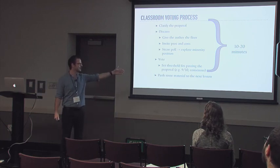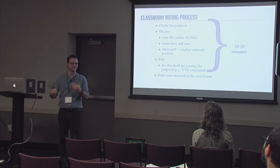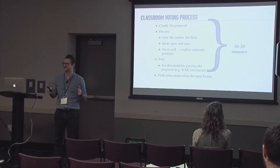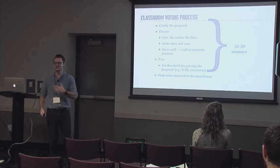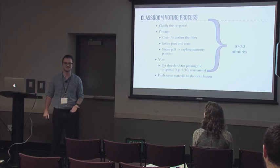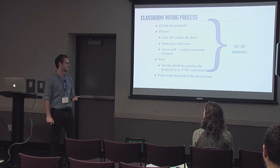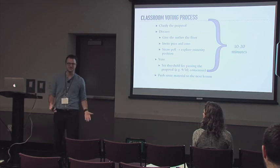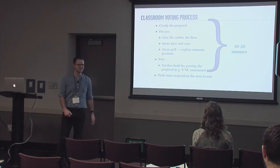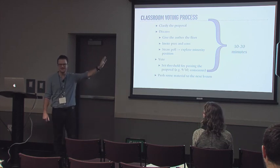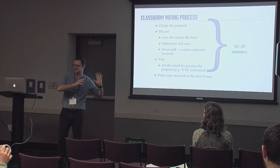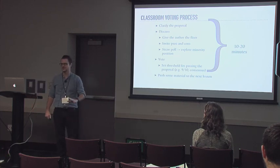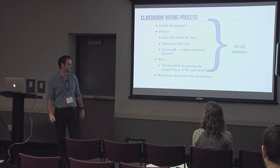And then we vote. Right before we vote I point out that we need to set the threshold for passing the proposal. It probably shouldn't just be a majority rules because that's pretty unstable, so I suggest that you do this with nine-tenths or consensus, which is a hundred percent of the vote. Once we decide on that as a class, we move to the voting stage and either the proposal passes or it doesn't. This whole process might take 10 to 20 minutes, so you'll need to be ready to push some material on to the next session or just drop something unimportant overall for the week.